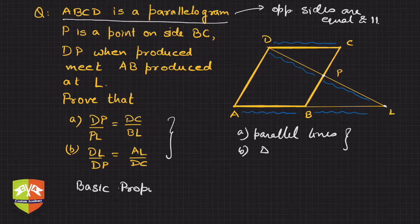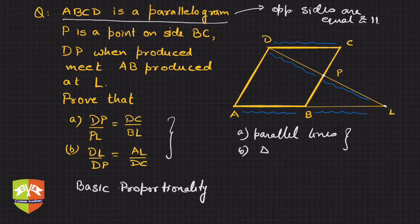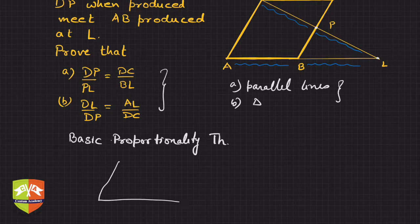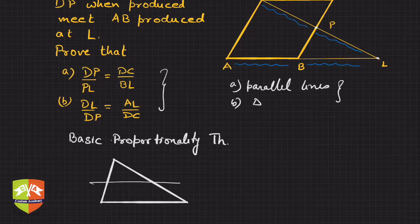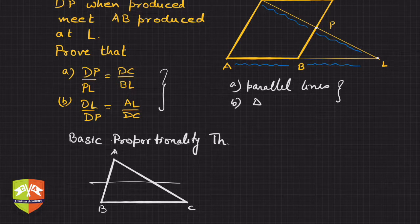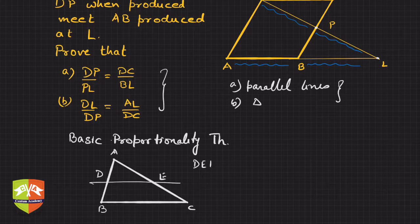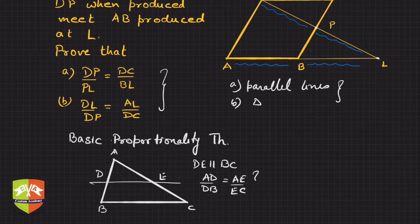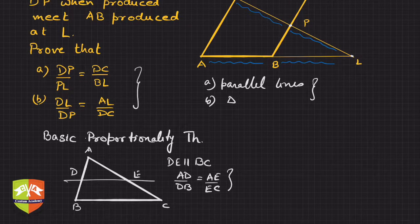The Basic Proportionality Theorem states that if you have a triangle ABC with a line DE parallel to BC, then AD upon DB is equal to AE upon EC. No problems with that.